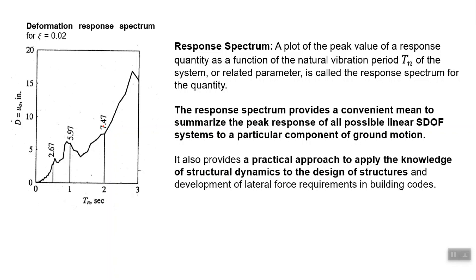For past earthquakes, this figure tells us what was the acceleration, velocity, or displacement experienced by different structures when that earthquake occurred. In one figure you can directly tell, for example, that a 1.4 second structure experienced a displacement of 4 inches, but a 1 second structure experienced a displacement of almost 6 inches. In general the graph is going up, but it is jagged or shaky.